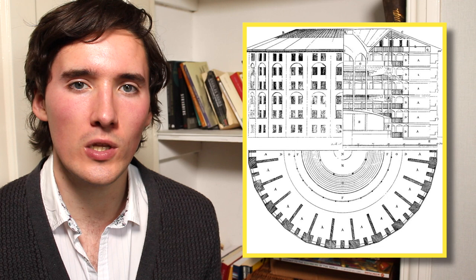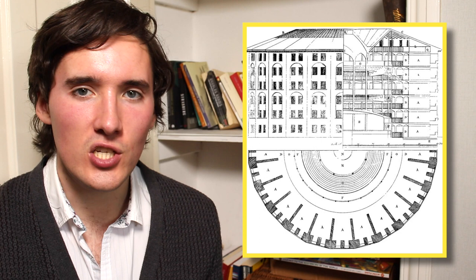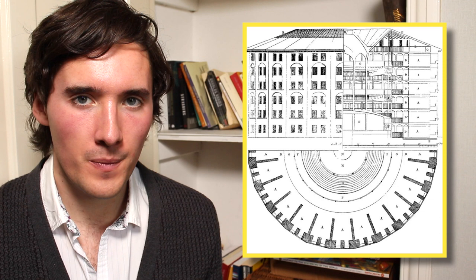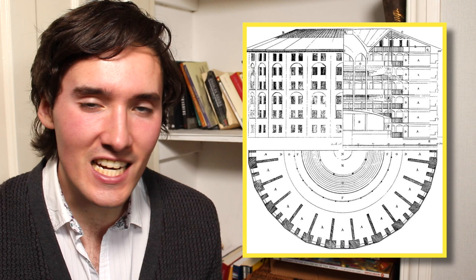To understand that we need to talk about Bentham. 18th and 19th century English philosopher Jeremy Bentham designed a hypothetical prison called the Panopticon. The Panopticon is a circular building with cells built into the circular wall and a central observation tower. From the tower you can see into every cell, and from every cell you can see that the tower is there. But the tower is designed with blinds and shutters so that the prisoners can't see into it — they can only see that it's there.